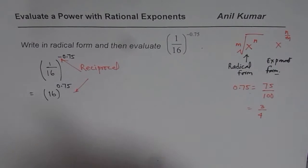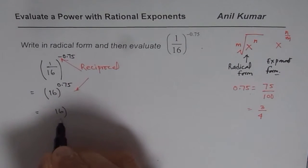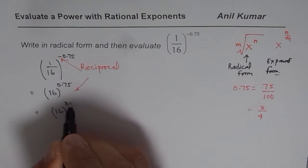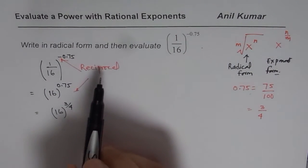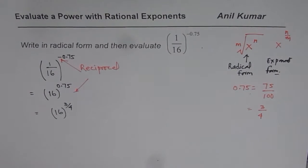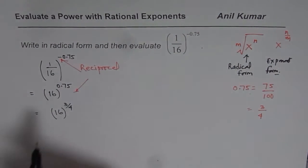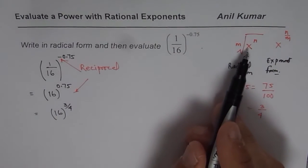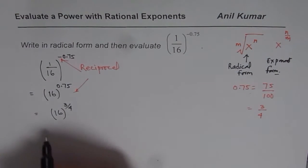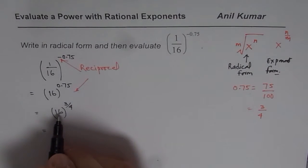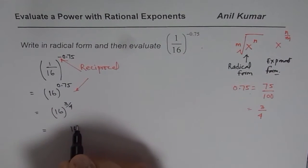So, we could write this as 16 to the power of 3 over 4. That is writing it as a rational exponent. But we need to write it in radical form. So, what is that? That really is this form. Let me rewrite this in radical form.